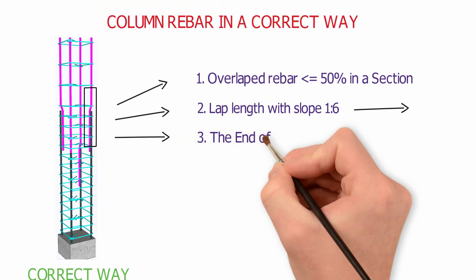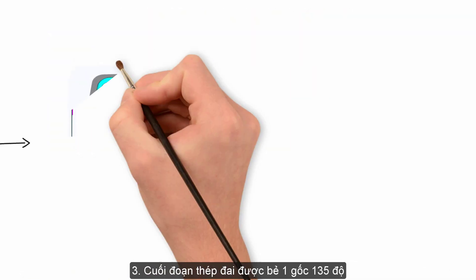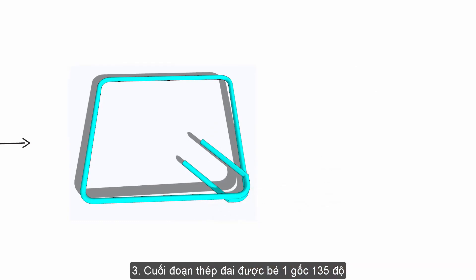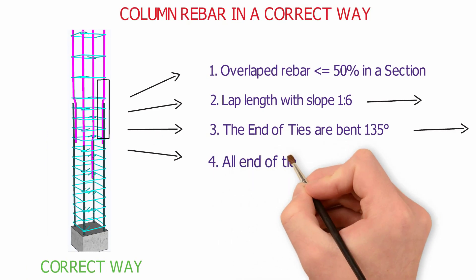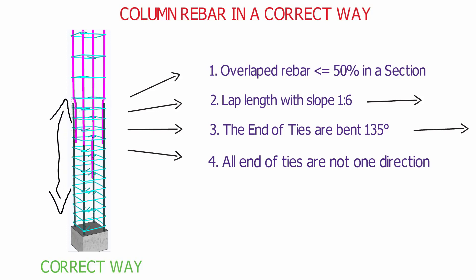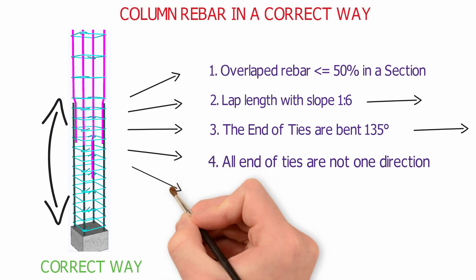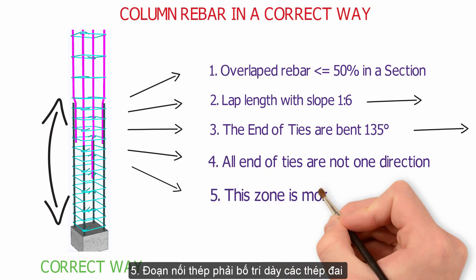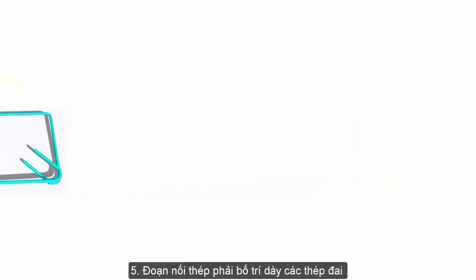Rule 3: The end of ties are bent 135 degrees, like this. Rule 4: All inner ties are not one direction. Rule 5: And the fifth, this zone is more inner ties.